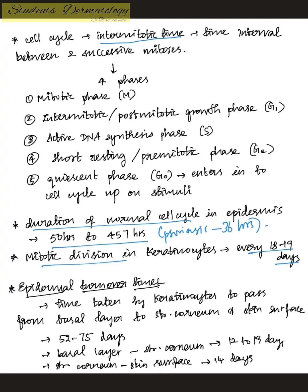Mitotic division takes place around every 18 to 19 days in the basal layer of keratinocytes. Epidermal turnover time is the time taken by keratinocytes to pass from the basal layer to the stratum corneum on the skin surface. The approximate epidermal turnover time is around 52 to 75 days — from basal layer to stratum corneum it takes about 12 to 19 days, and through the stratum corneum it is about 14 days.